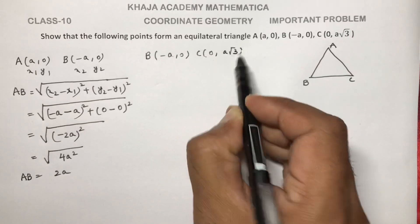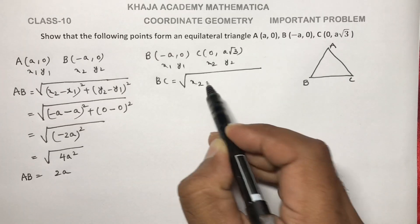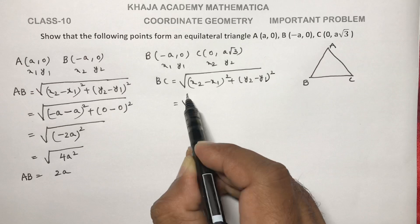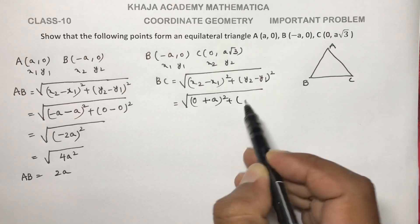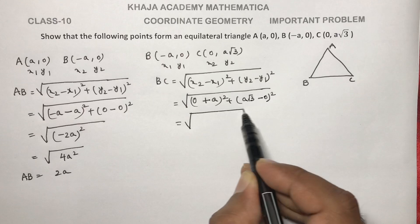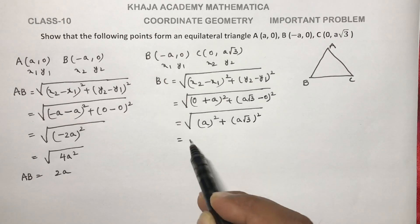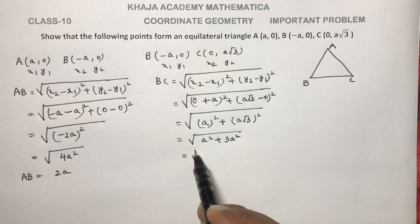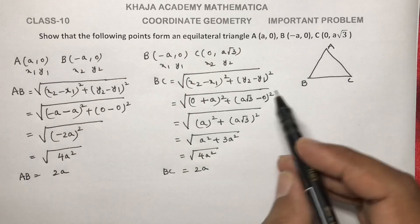Now find BC distance. B is (-a, 0) and C is (0, a√3), so x1, y1, x2, y2. BC distance formula: under root of (x2 - x1) whole square plus (y2 - y1) whole square. Here, (0 - (-a)) whole square plus (a√3 - 0) whole square equals a square plus 3a square, which gives 4a square. So BC distance is 2a.